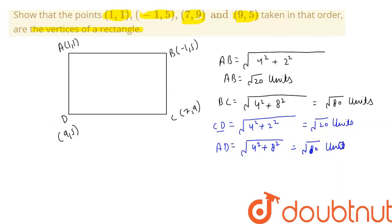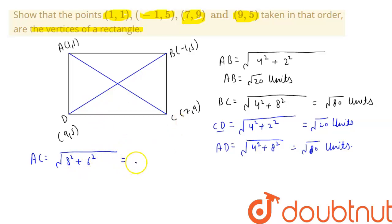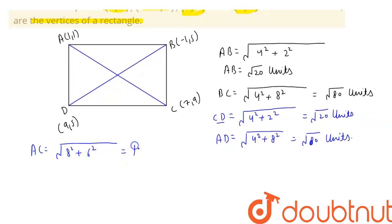Now we calculate the length of the diagonals AC and BD. Let us draw them first. The length of diagonal AC equals the square root of (9 minus 1) squared plus (7 minus 1) squared, which is the square root of 8 squared plus 6 squared, giving us the square root of 100, which equals 10 units.